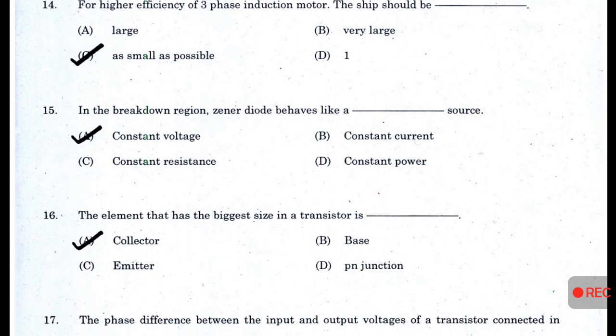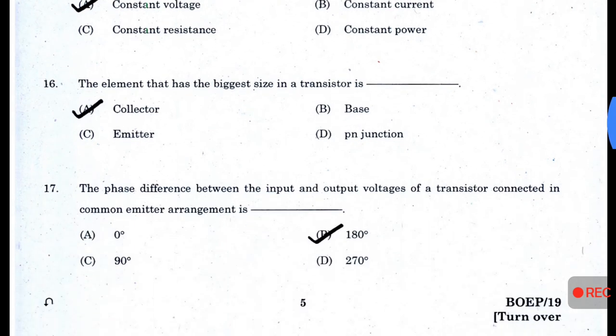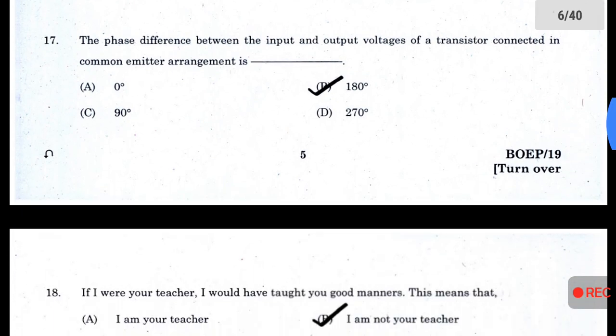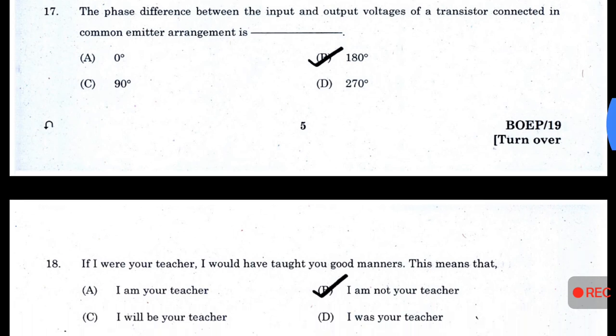In the breakdown region, a Zener diode behaves like a constant voltage source — answer A. The element that has the biggest size in a transistor is — answer A — the collector. The phase difference between the input and output voltages of a transistor connected in common-emitter arrangement is 180 degrees.